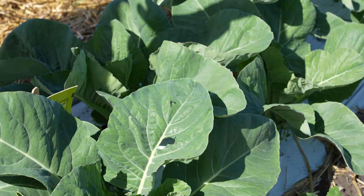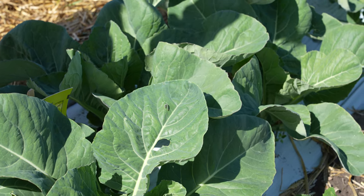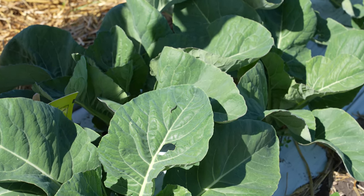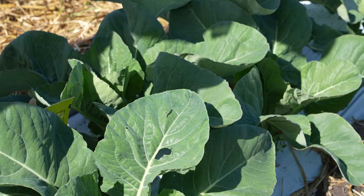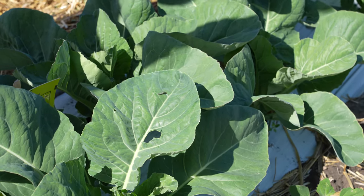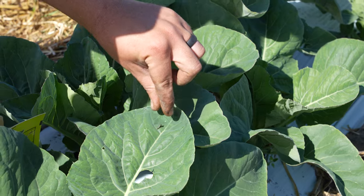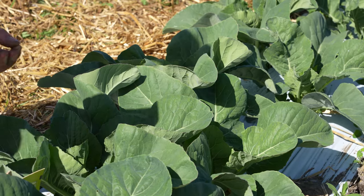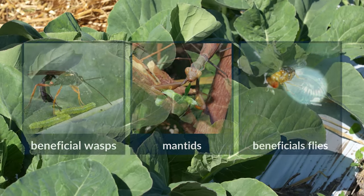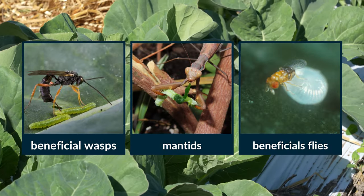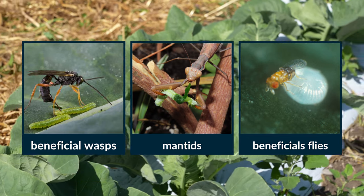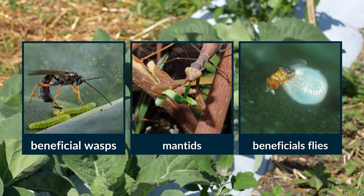Here are some ways to manage cabbage loopers in your garden or farm. The first one is hand picking — inspect your plants regularly and manually remove any cabbage loopers that you find. Drop them into a bucket of soapy water to kill them. You can also encourage natural predators like birds, lacewings, ladybugs, and parasitic wasps, which feed on cabbage loopers.